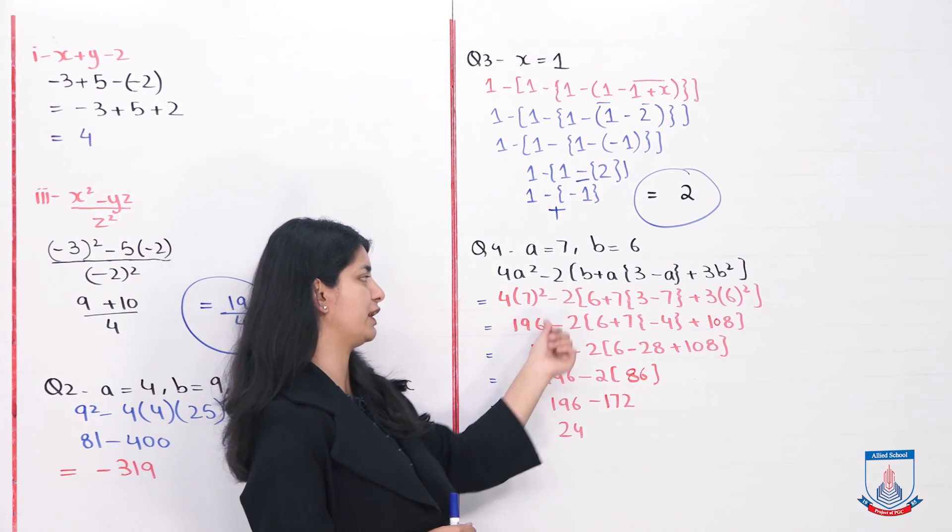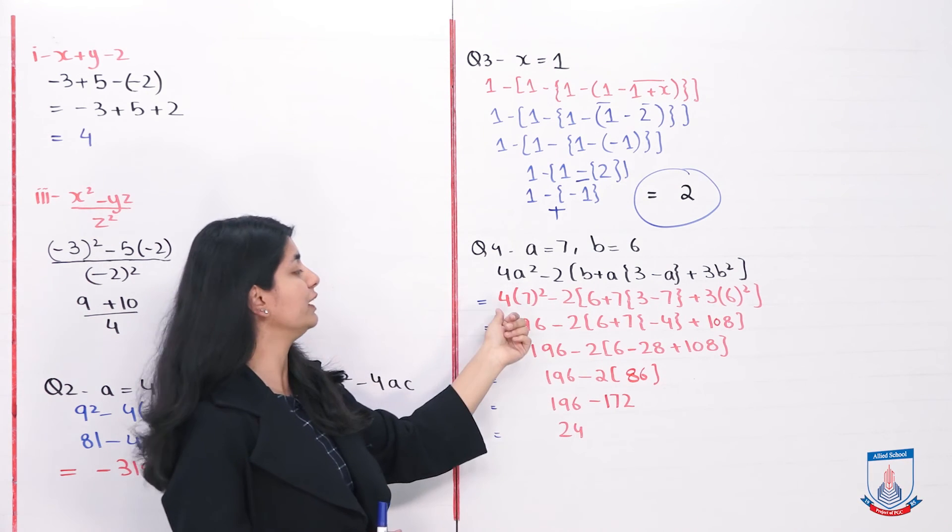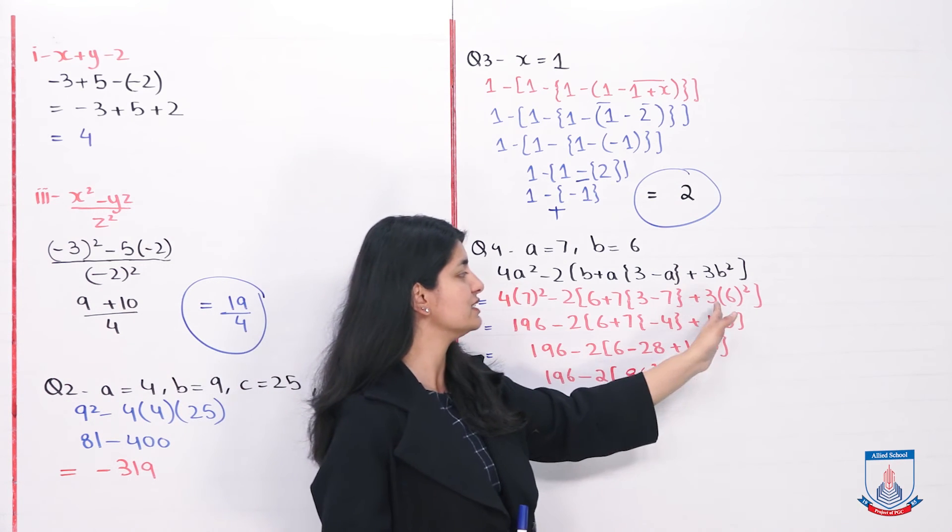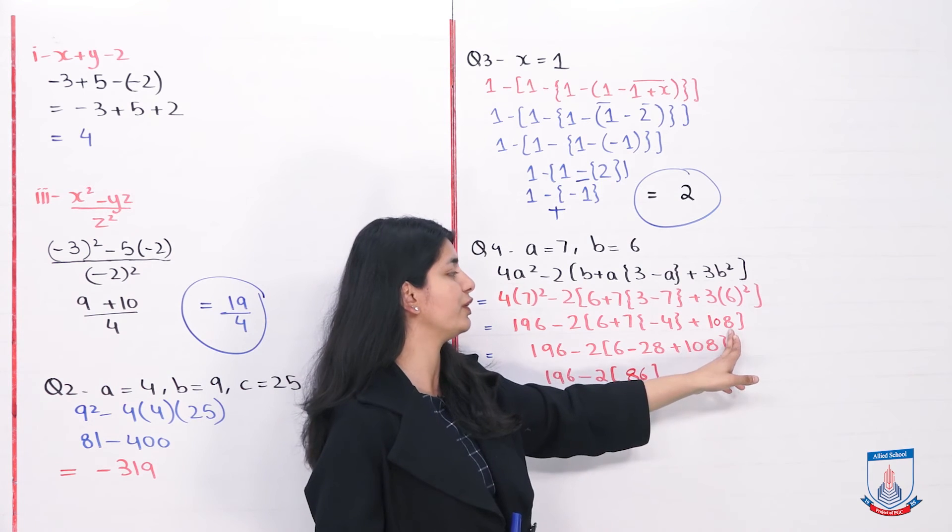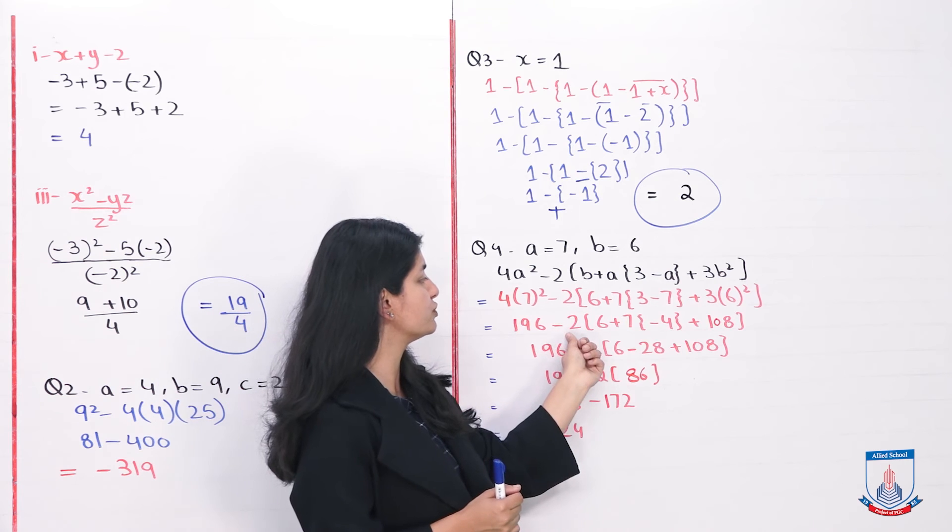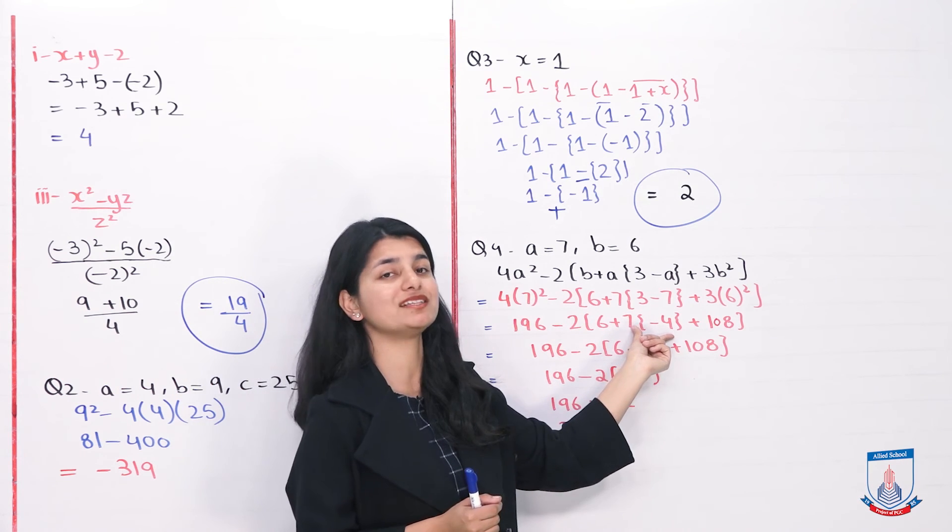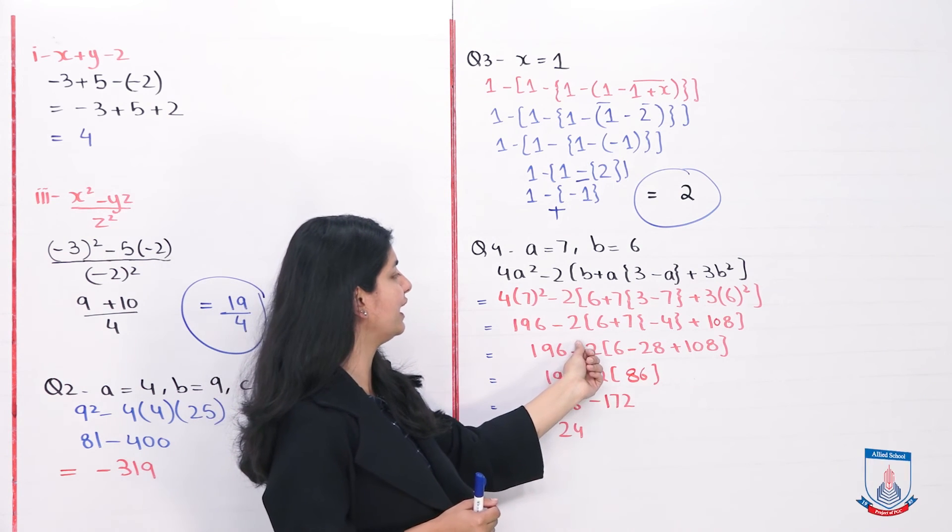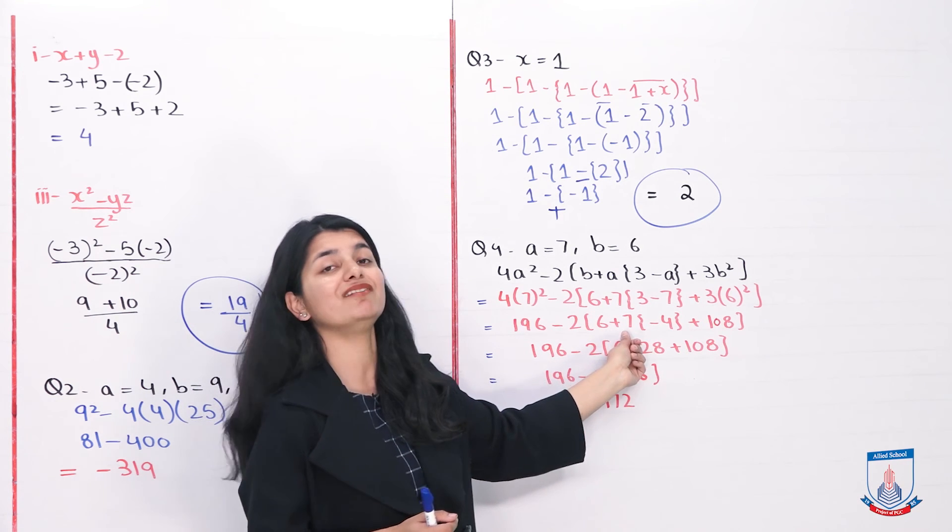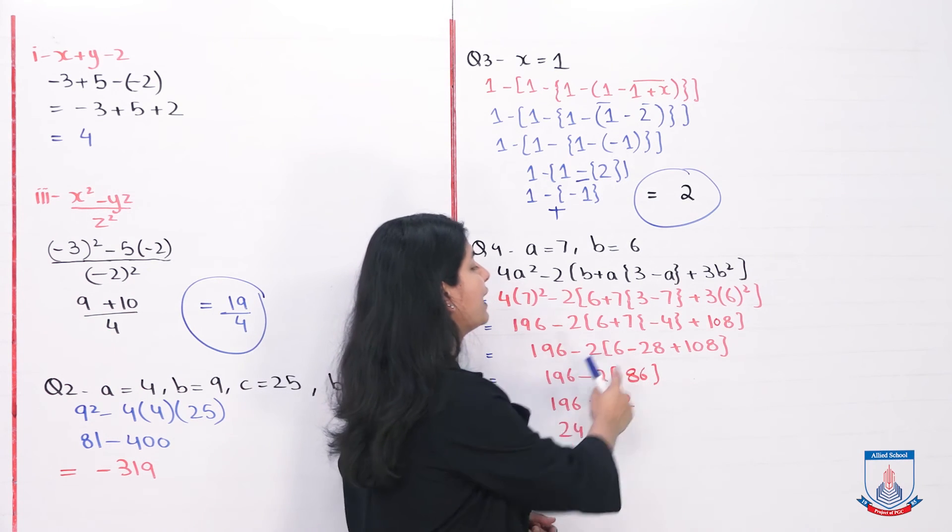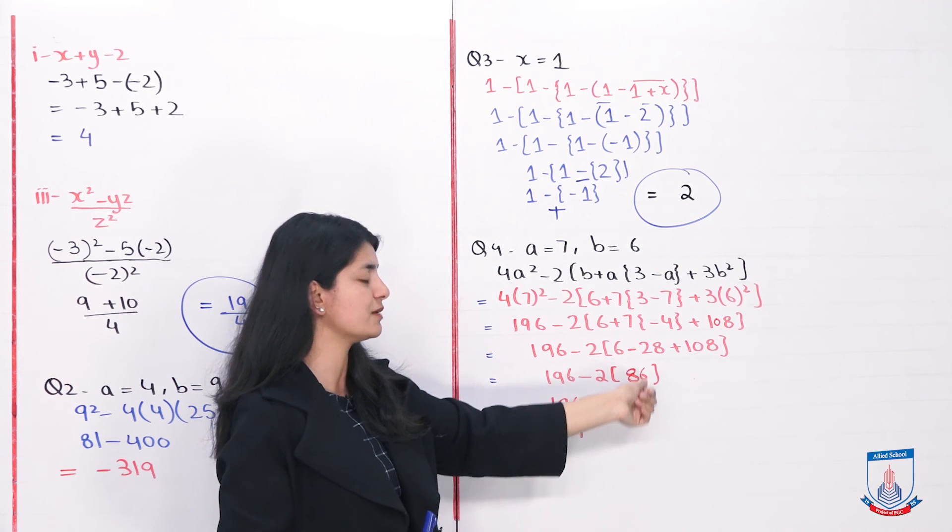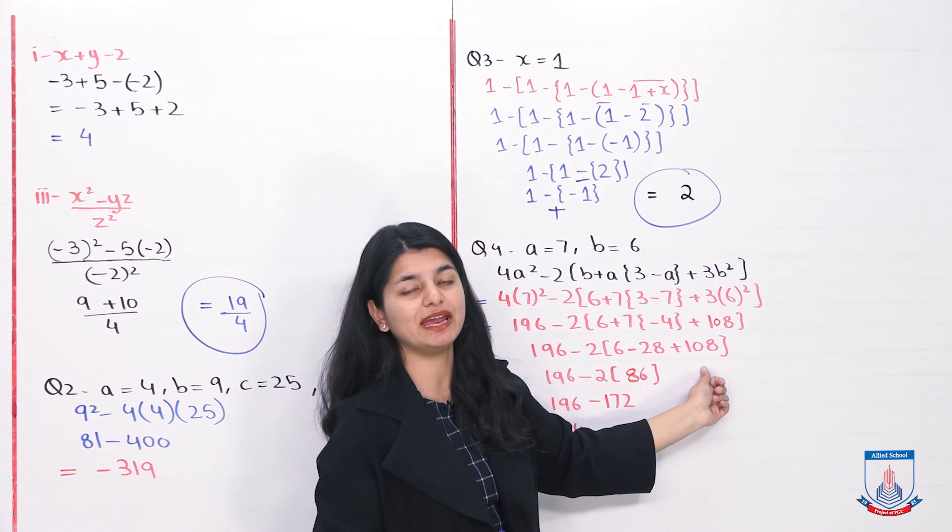7 squared is 49, 49 into 4 is 196. 6 squared is 36, 36 into 3 is 108. We've opened our parenthesis. Next we solve the part where the braces are. 3 minus 7 becomes minus 4, and when minus 4 multiplies with the outside 7, it becomes minus 28. Eventually in the bracket you'll have 6 minus 28 plus 108.